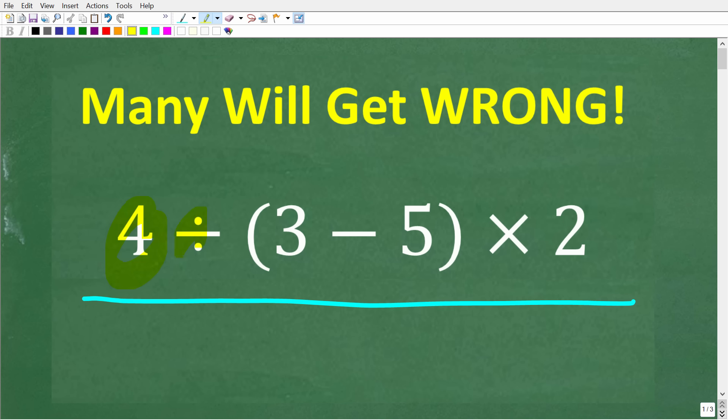We have 4 divided by 3 minus 5 in parentheses times 2. Okay, now if you think you know the answer, put that into the comment section. I'm going to show you the correct solution in just one second. Then of course I'm going to fully explain how to do this problem and also where a lot of people are going to go wrong.